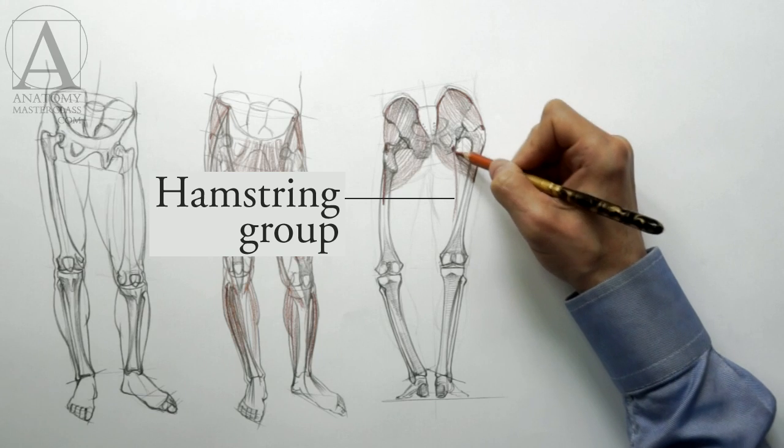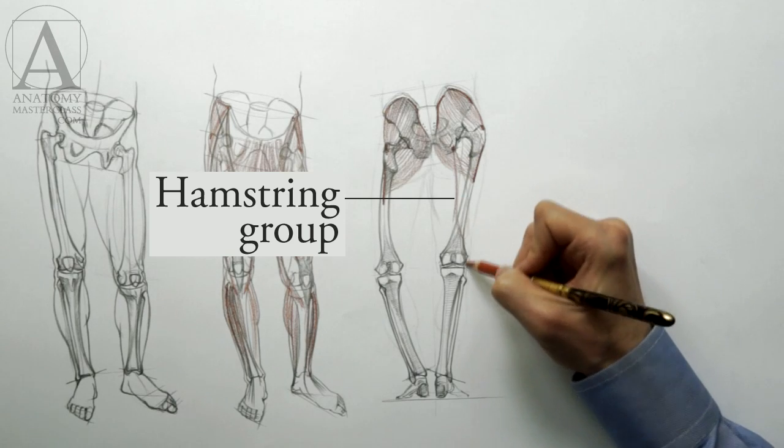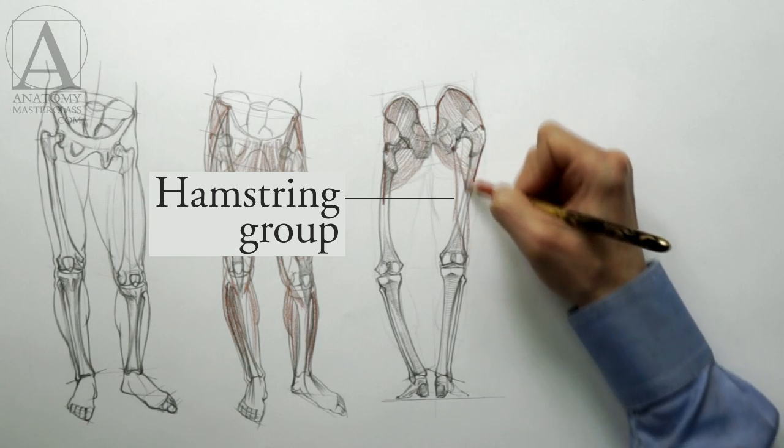The hamstring group of muscles is located on the back of the thigh. It resembles a cylindrical mass and covers most of the rear portion of the upper leg.